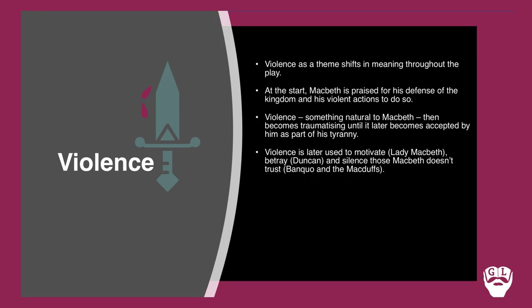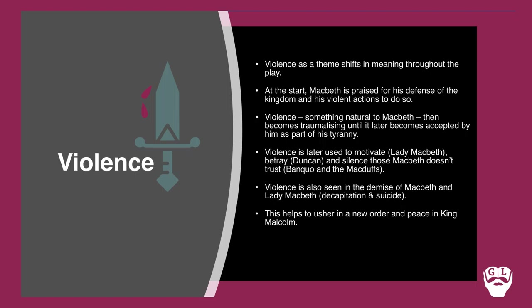Violence is also seen in Lady Macbeth's use of it as motivation — she talks about how she would dash the brains out of a child. It's used to betray Duncan under Macbeth's own roof; it's used to silence those Macbeth doesn't trust, like Banquo. Having heard the Act 4 prophecy, he realizes he can't trust the Macduffs either. Violence also marks the demise of both protagonists: Macbeth is decapitated as a traitor by Macduff, and Lady Macbeth takes her own life.